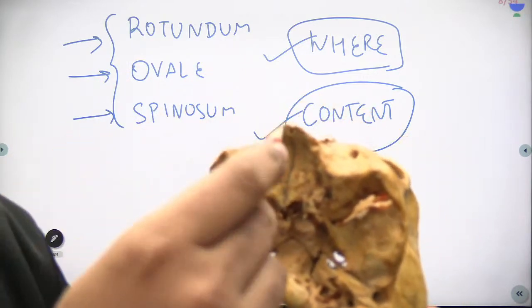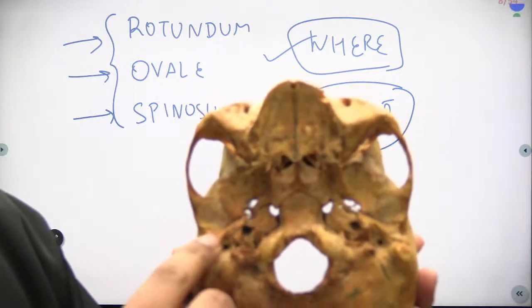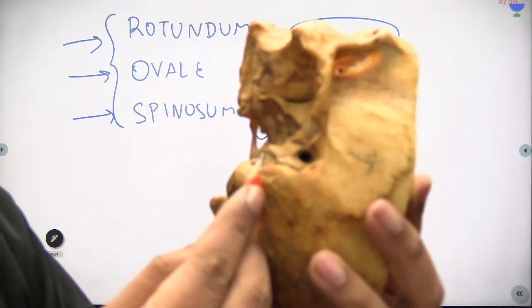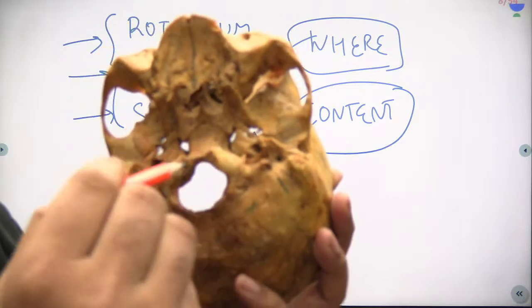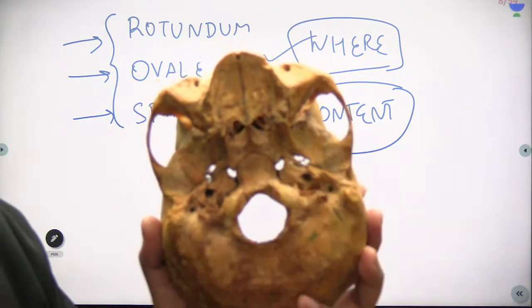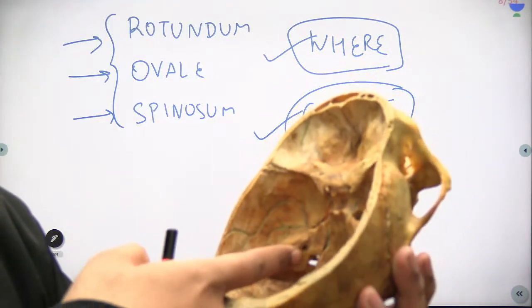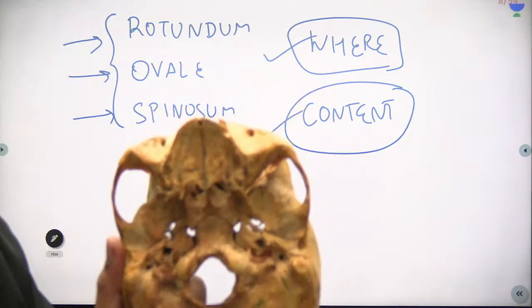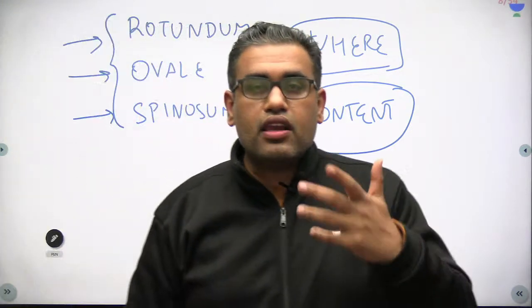There are also the incisive and palatine foramina, though they are not frequently asked in NEET PG. The styloid process is visible here and the mastoid process is over here. Between the styloid and mastoid processes is the stylomastoid foramen, from which the 7th nerve comes out. The 7th and 8th nerves enter the internal acoustic meatus from the brain stem — the 8th nerve is dedicated to the ear, but the 7th nerve exits externally through the stylomastoid foramen. And this large opening is the foramen magnum, where the lower end of the medulla oblongata passes through and becomes the spinal cord.